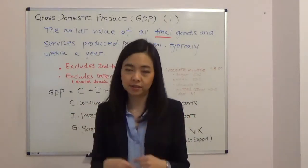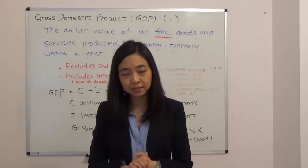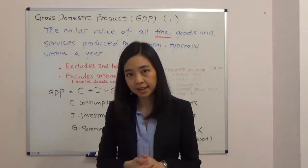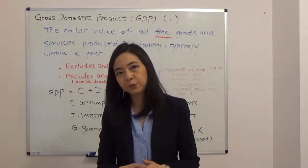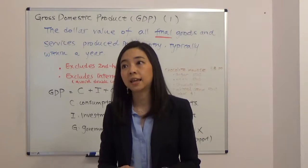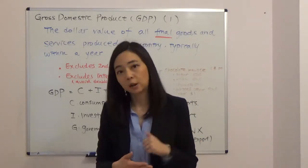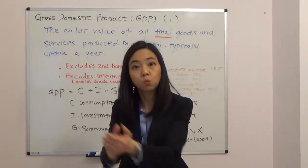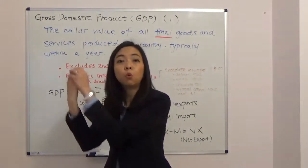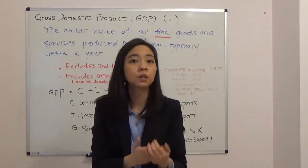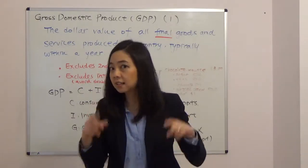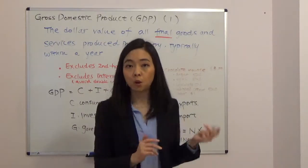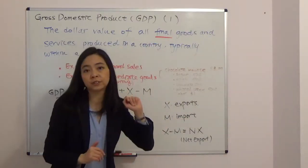The idea is we want to know how much goods and services a country has produced within the year, and therefore we only count new things. That means we're not going to calculate second-hand sales. For example, if you purchase something at a garage sale, that's nothing new — it was counted before when it was new, so we don't count it again.